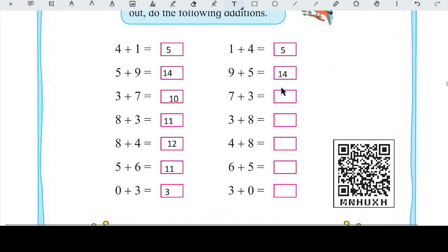7 plus 3, so angels, yeh dekhiye aap. Humein yahan par kya diya gaya hai ki 4 plus 1, 5, 1 plus 4 bhi 5. 5 plus 9, 14, 9 plus 5 bhi 14. 3 plus 7 is 10, 7 plus 3 is also 10. So waise hi yeh continue karte hue, sab kuch same hai answer. Khali numbers ko aage peeche kar diya hai. So angels, humein confused nahi hona hai.